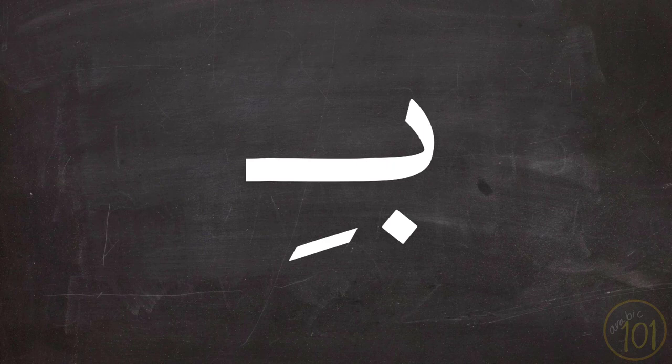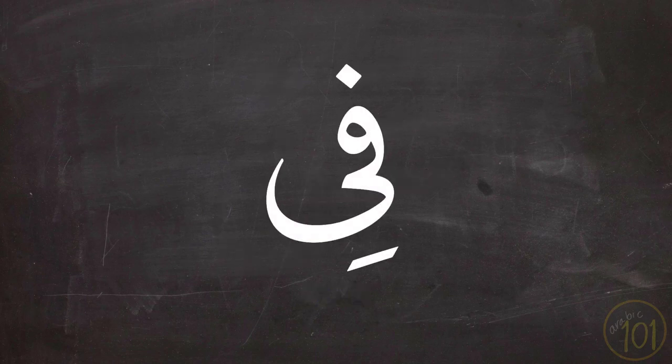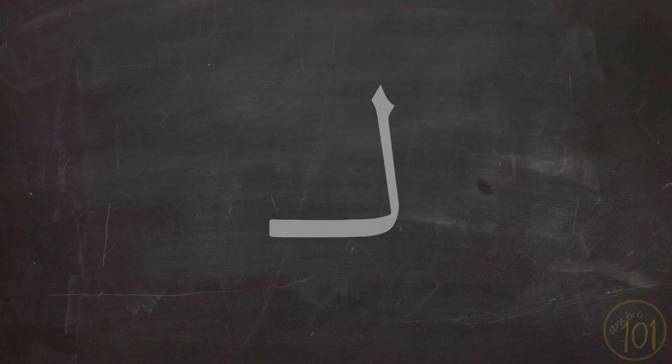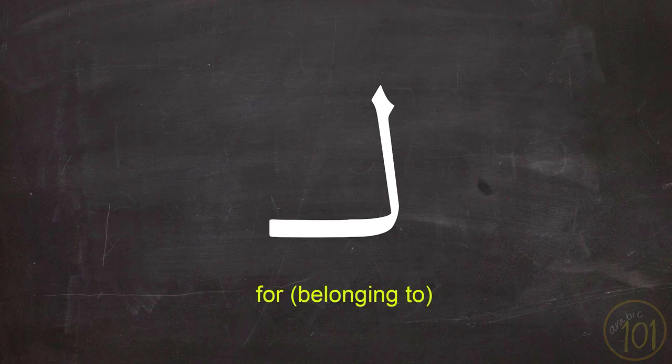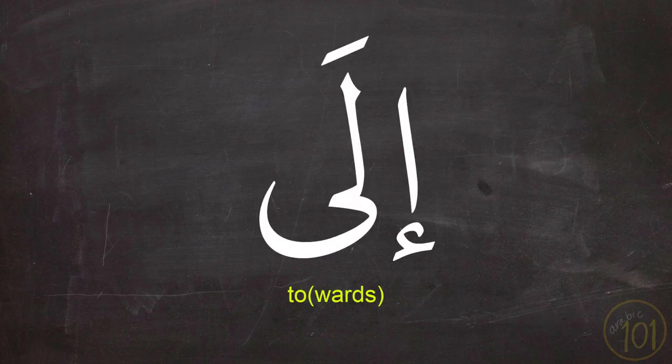The first preposition today is بِ and it means 'with' or 'in'. The next preposition is عَنْ and it means 'about'. Next is فِي and it means 'in'. The next preposition is كَ and it means 'as' or 'like'. Next is لَ and it means 'for' or 'belongs to'. Next, مِنْ and it means 'from'. The next one is إِلَى and it means 'to' or 'towards'.